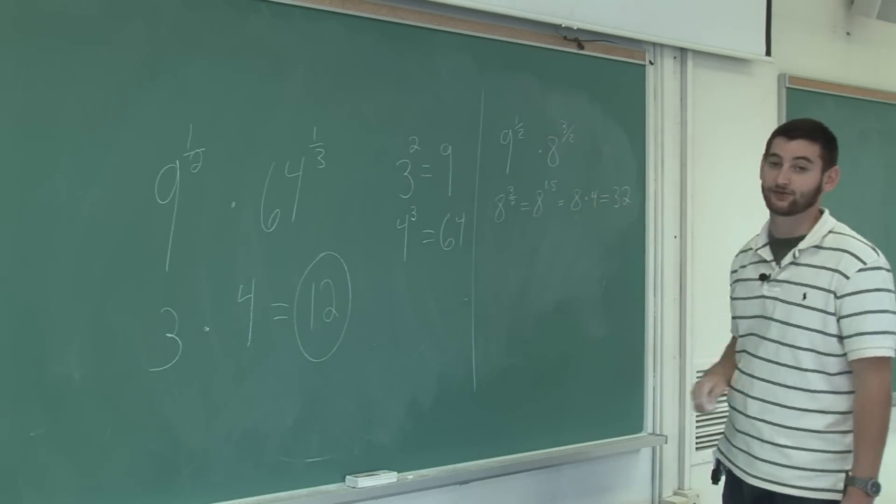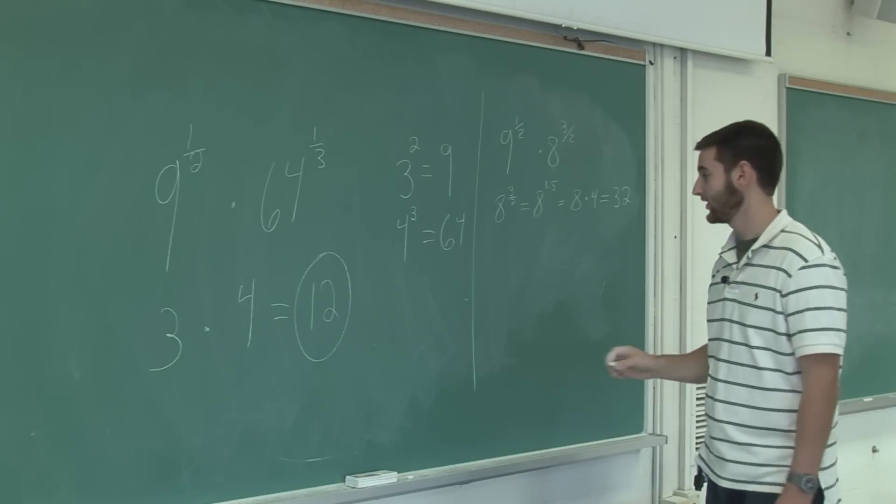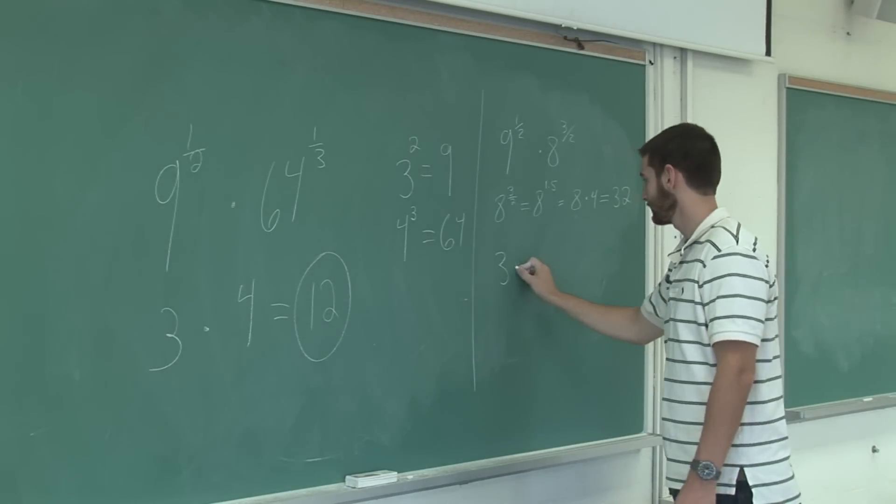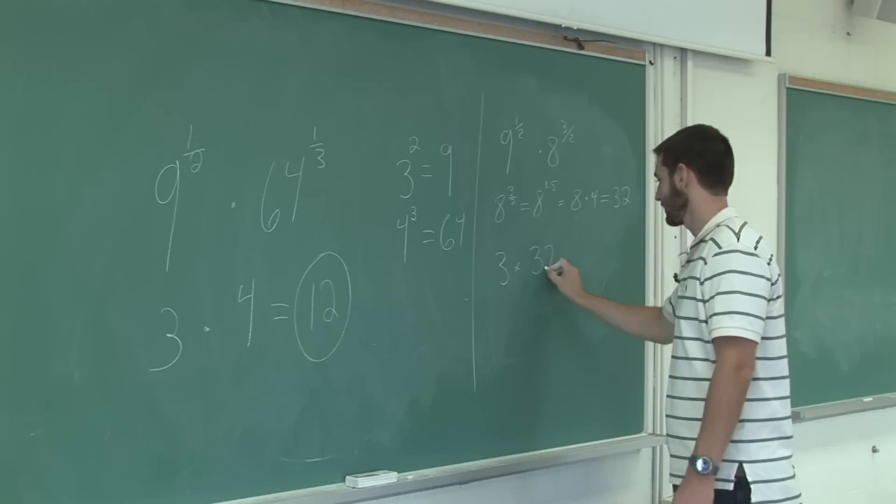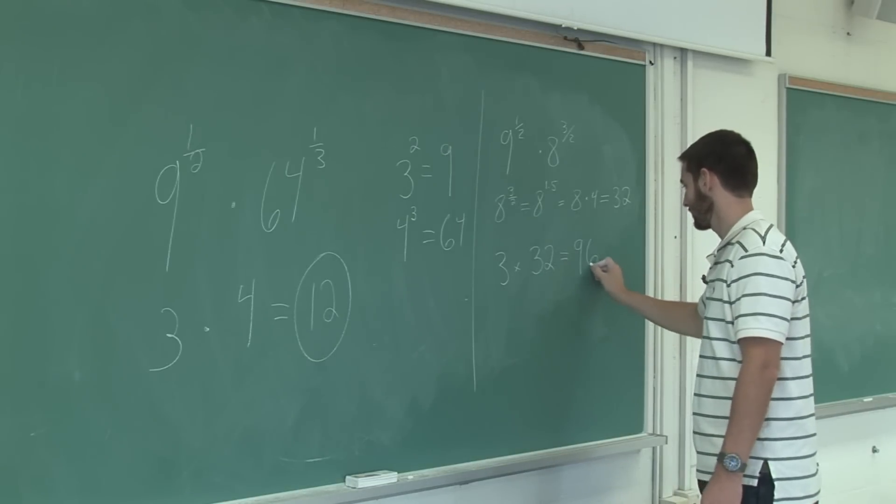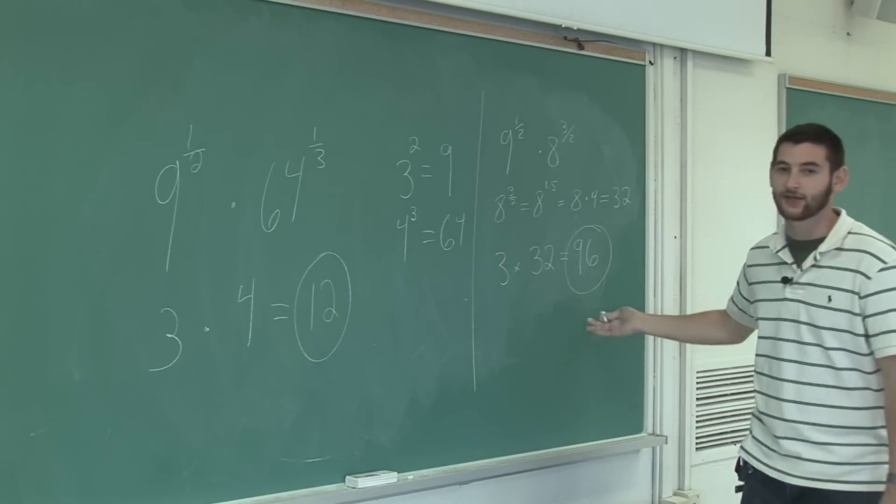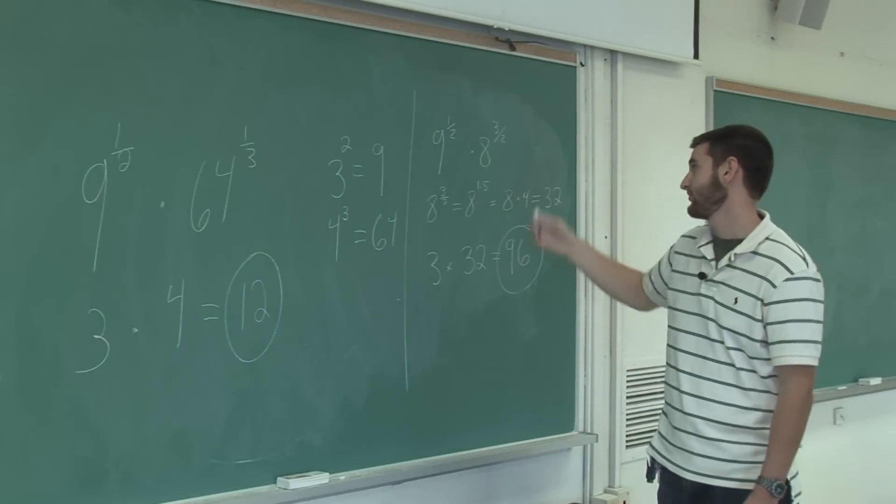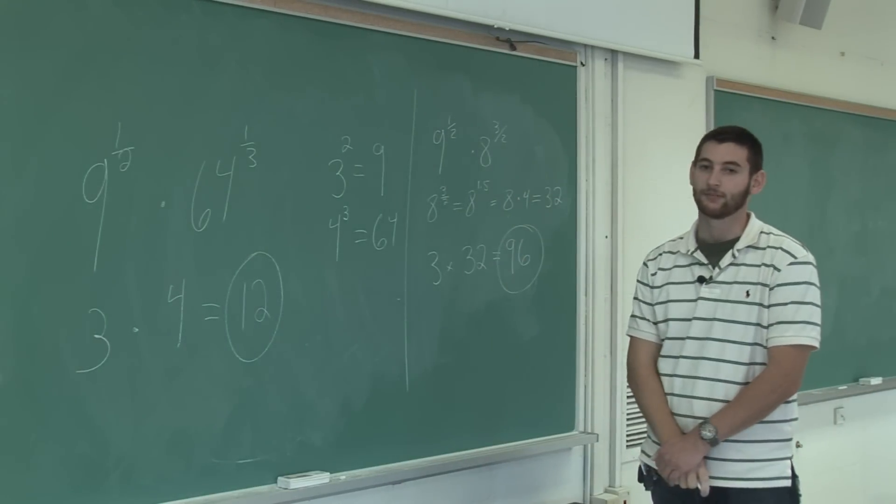9 to the half is 3 because 3 is the square root of 9. This is how you multiply numbers with fractional exponents with one of them being improper.